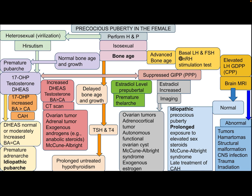If bone age is advanced, the patient needs LH and FSH along with a gonadotropin-releasing hormone stimulation test. If gonadotropins are suppressed, this is gonadotropin-independent precocious puberty — peripheral precocious puberty. If LH is elevated, this is gonadotropin-dependent precocious puberty — central precocious puberty — and the patient needs brain MRI. Abnormal MRI findings could include tumor, hematomas, structural malformation, CNS infection, trauma, or radiation. Normal MRI findings suggest idiopathic precocious puberty, prolonged exposure to elevated sex steroids, McCune-Albright syndrome, or late treatment of congenital adrenal hyperplasia.